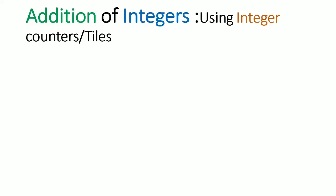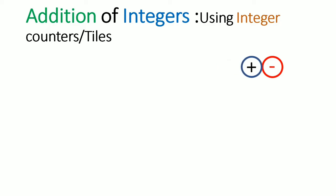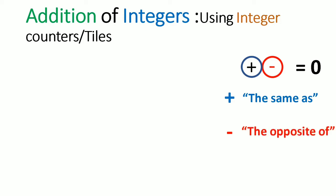Now let us take a closer look at our integer counters. This is your positive integer counter and this is your negative integer counter. When both counters come together, they equal 0 because they nullify each other. We need to keep in mind that whenever two basic operations come together — in particular plus or minus in any form — the plus should be treated as the same as, and the minus should be treated as the opposite of. These apply whenever more than one sign appears between two terms.